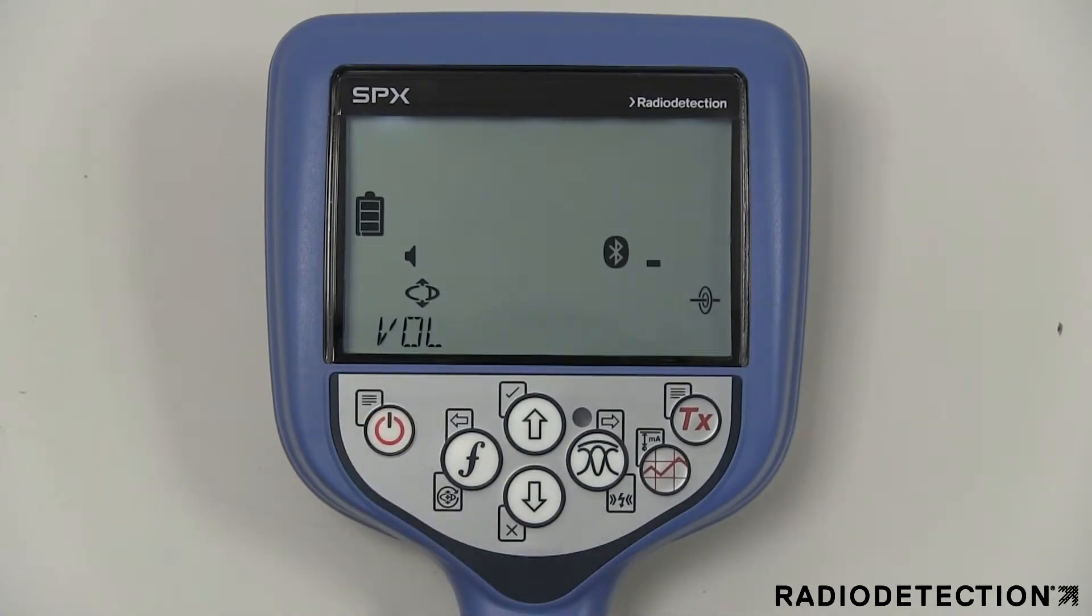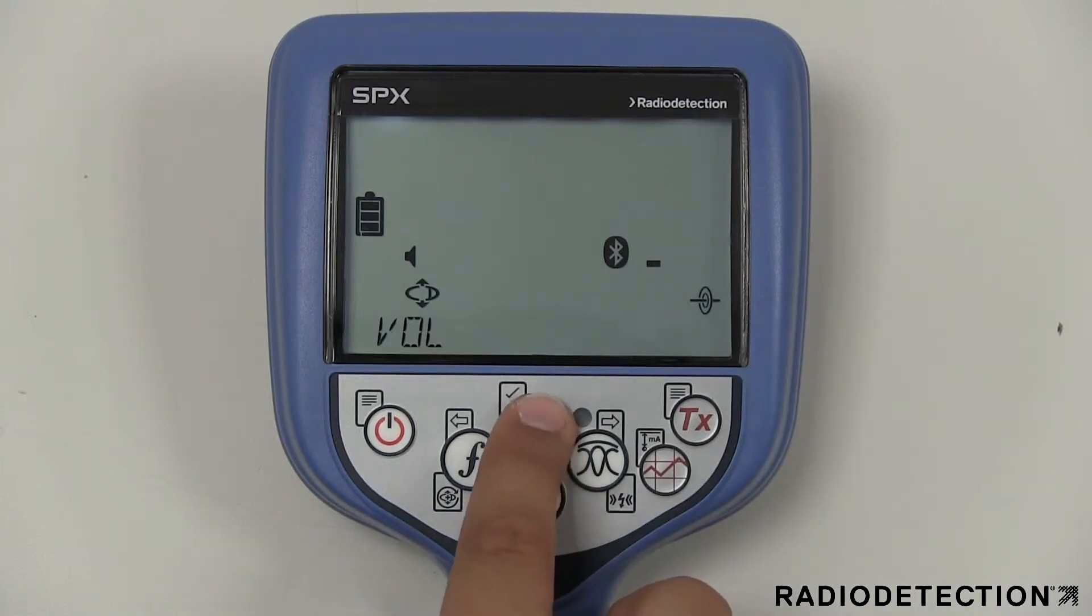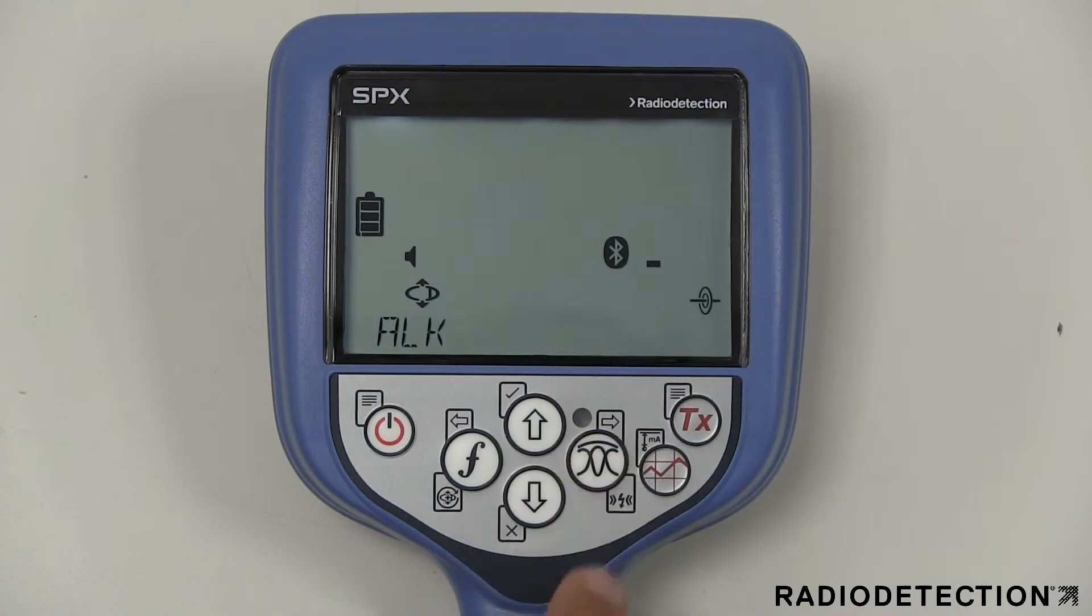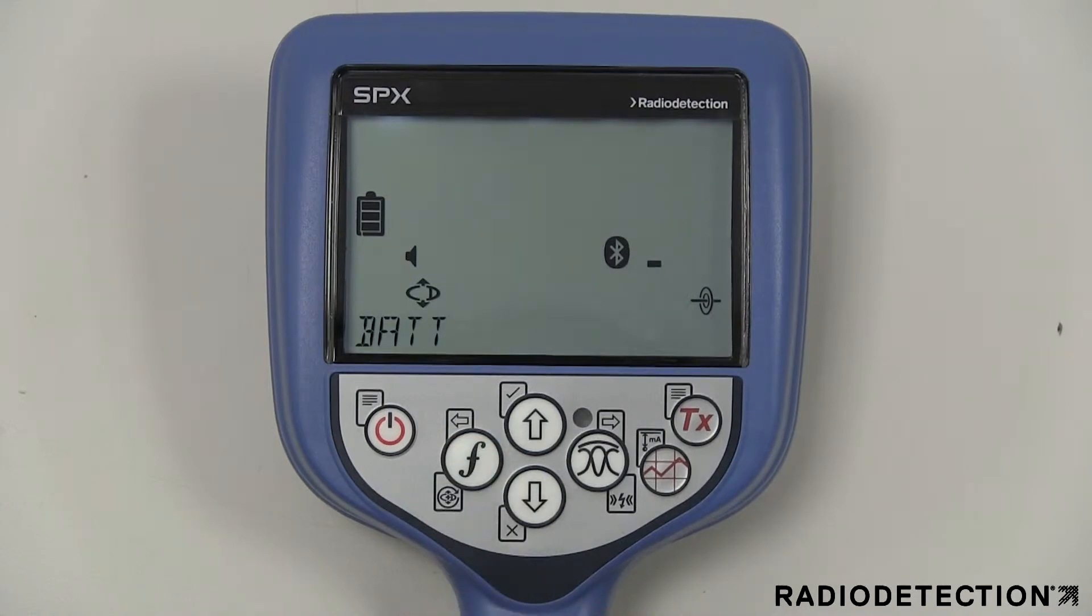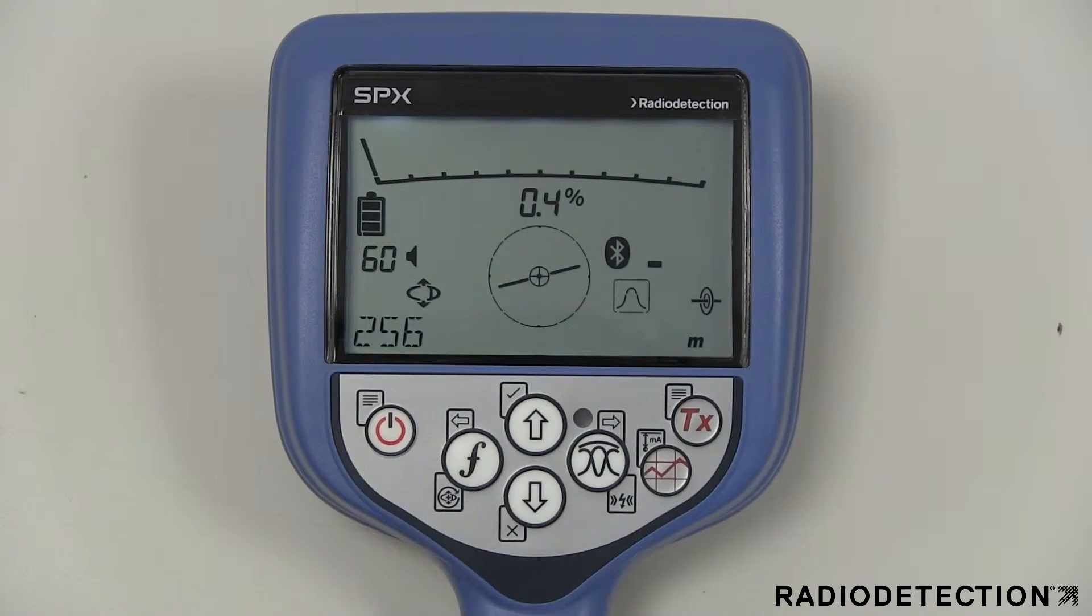To navigate the locator menu, press the power key briefly to enter the menu, use the up and down keys to scroll through the menu options, press the antenna key to enter the option submenu, use the up and down arrows to scroll through the submenu options, press the F key to make a selection and return to the previous menu, then press the power key again briefly to return to the main operation screen.